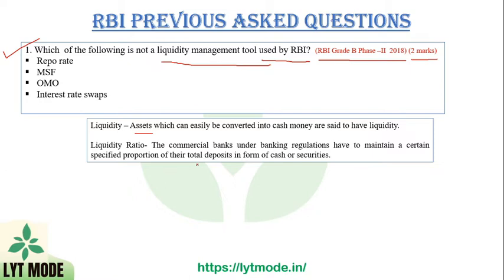The options in the question are: repo rate, MSF, OMO, and interest rate swap. Repo rate is the rate charged on banks for short-term borrowing — it is what the RBI charges commercial banks for short-term loans.